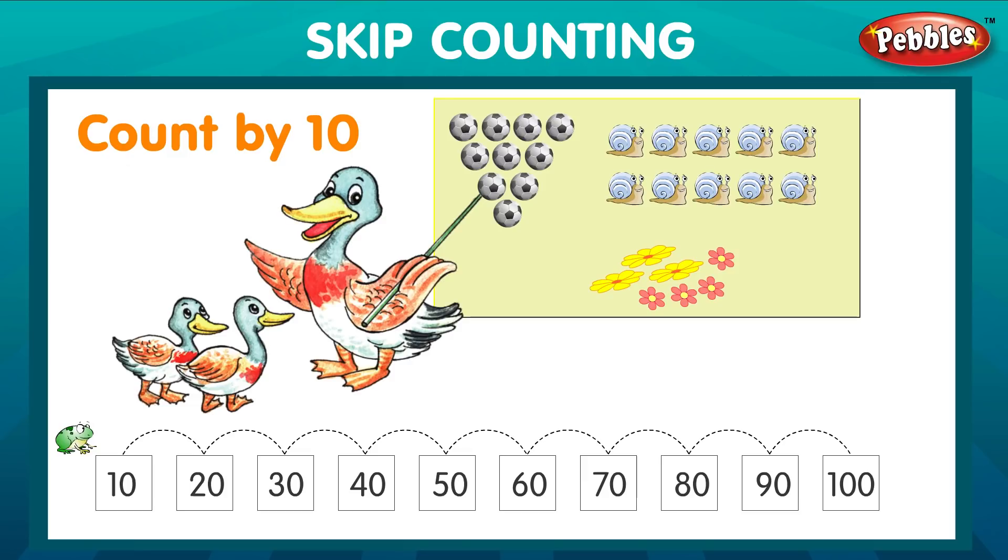Skip counting. Count by ten. Ten. Twenty. Thirty. Forty. Fifty. Sixty. Seventy. Eighty. Ninety. Hundred.